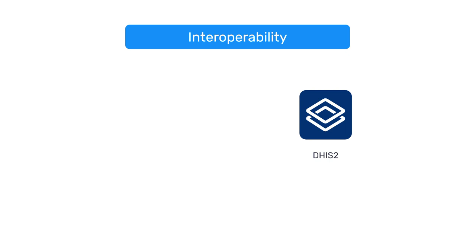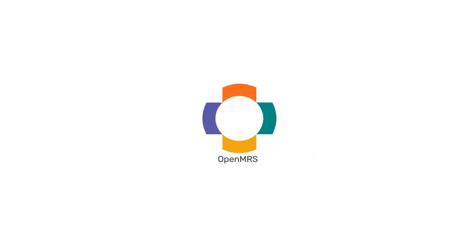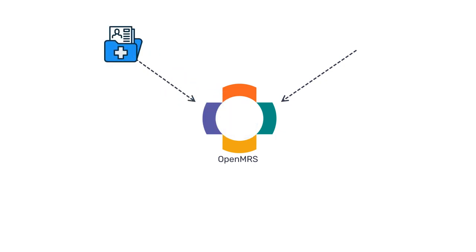For example, DHIS-2 and OpenMRS, which stands for Open Medical Record System, are interoperable because they allow the sharing of data and data definitions with each other. In this example, a health system may use OpenMRS to store detailed medical records for each individual hospital admission among other hospital and patient data.